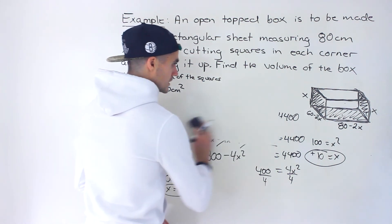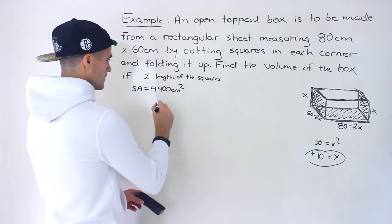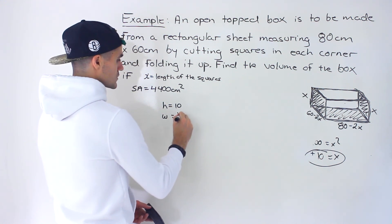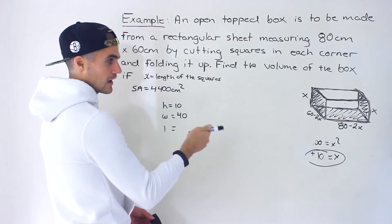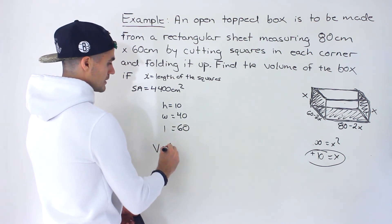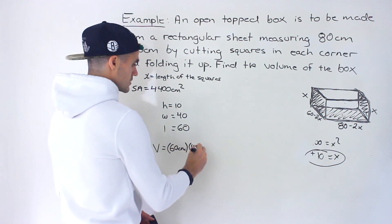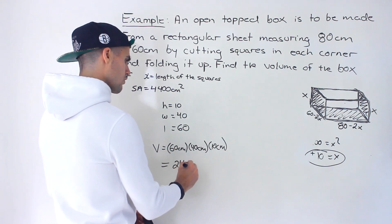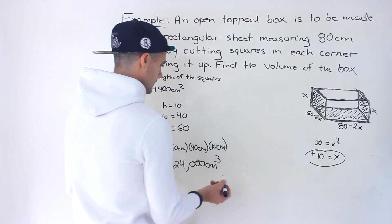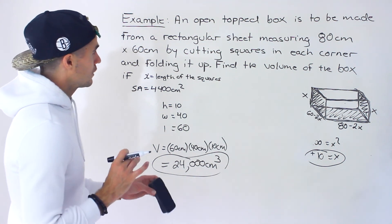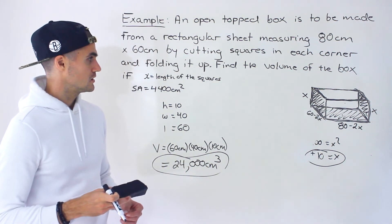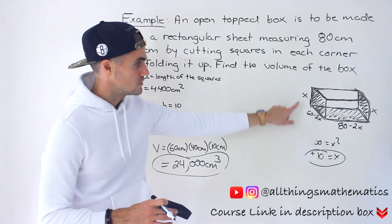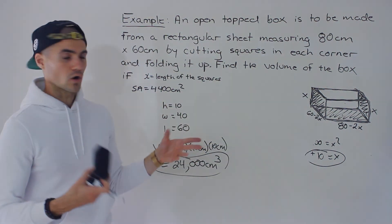We're not done yet because we just got the x value, which is the height. The height is 10 centimeters. The width is 60 minus 2 times 10, which is 60 minus 20, giving us 40 centimeters. The length is 80 minus 2 times 10, which is 80 minus 20, giving us 60 centimeters. The volume is length times width times height: 60 × 40 × 10 centimeters, which gives us 24,000 centimeters cubed. Just be on the lookout for these kinds of questions — if you're taking a rectangular sheet and folding it up to make a box, this is how you do it.